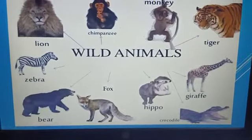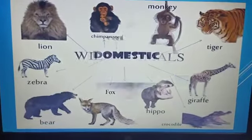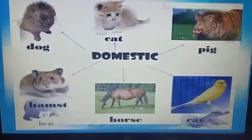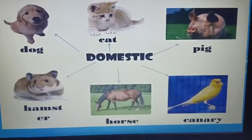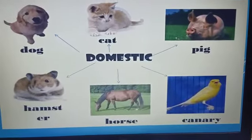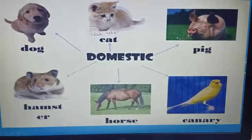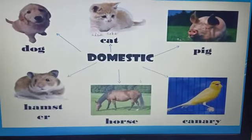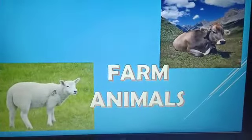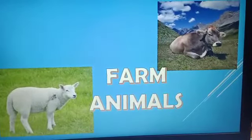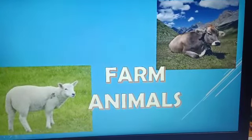Wild animals are not found near your house anywhere, hopefully. The second kind is domestic animals. Domestic animals are those who can stay in your house like a pet, or otherwise you can see them on the road everywhere. Domestic animals are also of one kind, that is farm animals, like cow and sheep.